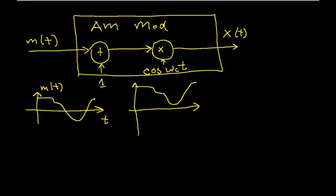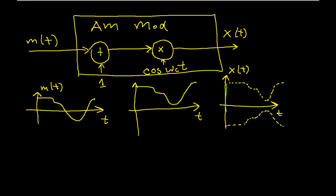This signal then goes through a very large power amplifier and is broadcast through the antenna. If we look at what X of t looks like in the time domain, it basically has an envelope given by the raised-up M of t. X of t wiggles between the two levels of this envelope. You can see that the amplitude of the cosine waveform now depends on M, and that's why we call it amplitude modulation.